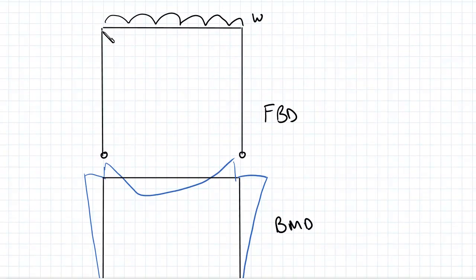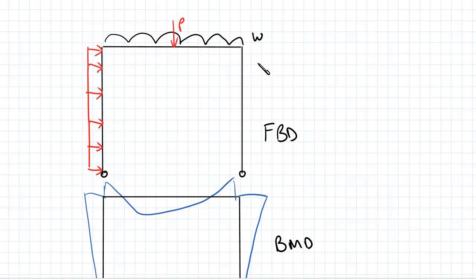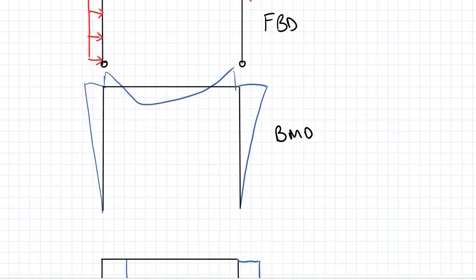You might have some other UDL on this side that you have to consider. In reality you might have a point load here, P1, you might have another point load there, P2, and that can really complicate your BMD and AFD.